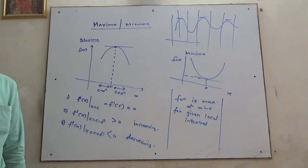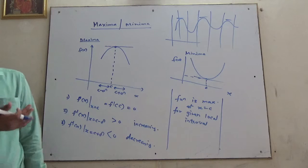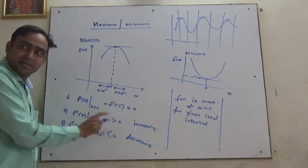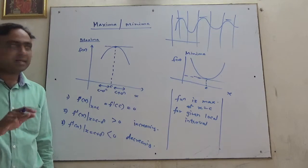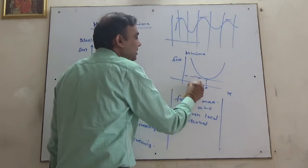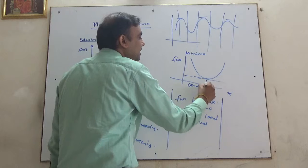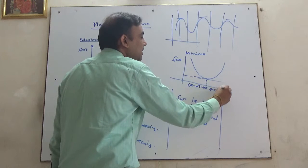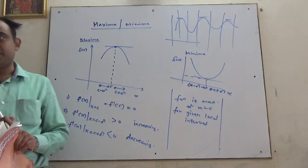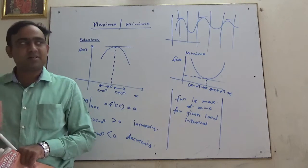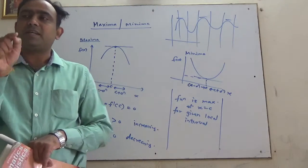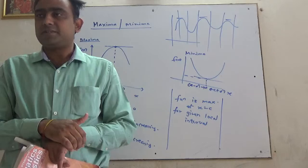Second, it should be decreasing before and increasing after, meaning this will be reversed. Either at c minus delta it's decreasing and at c plus delta it's increasing, so these signs will change. If such a situation forms, then for the interval c minus delta and c plus delta, for the local interval, it's a minima.